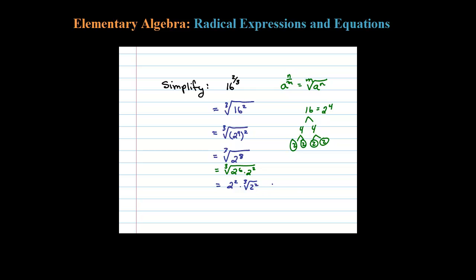You can rewrite that as 4 times the cubed root of 4. So that's the exact answer. Another way to think of this is the index 3 goes into 8, 2 times with 2 left over. Either way, you're going to get 4 times the cube root of 4.